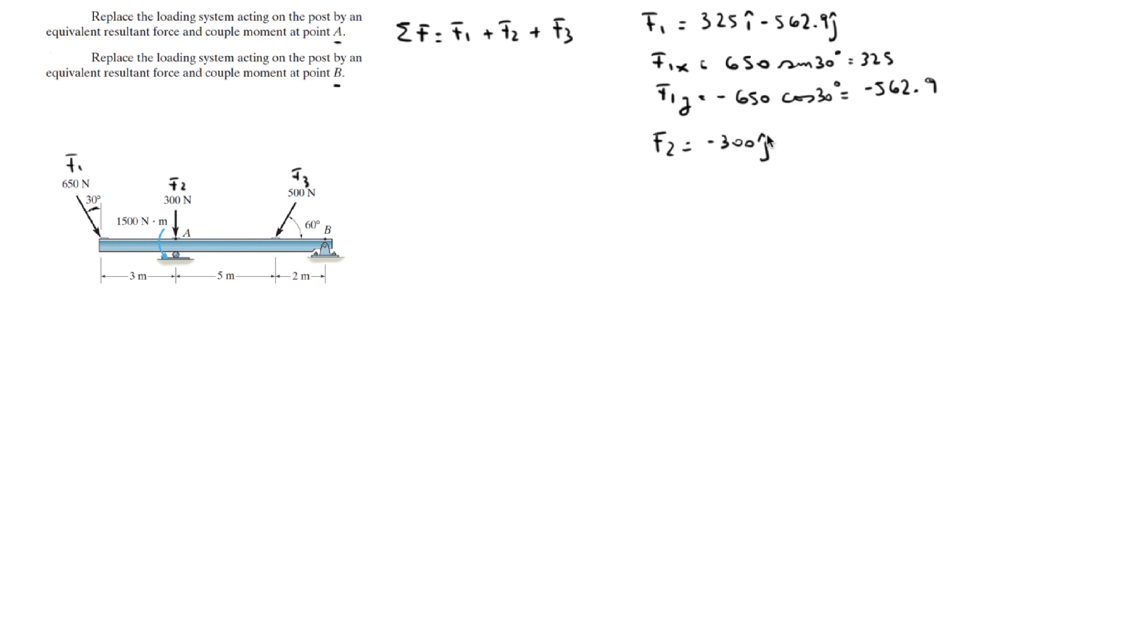And F3 has an X component F3x and F3y. In the X, it's given by the magnitude which is 500 times the cosine of 60, and it's negative because it's going towards the left.